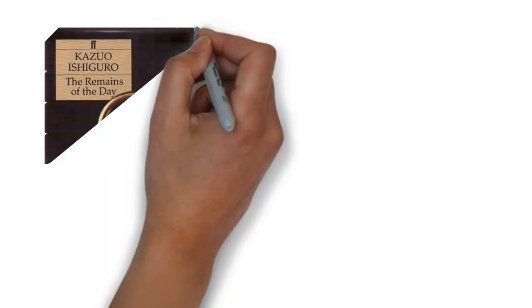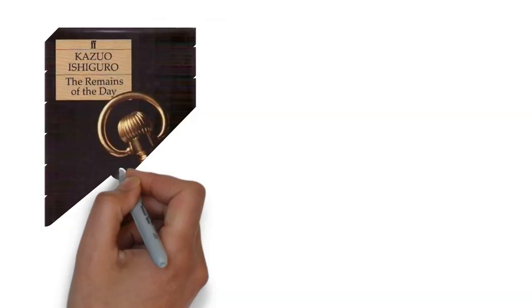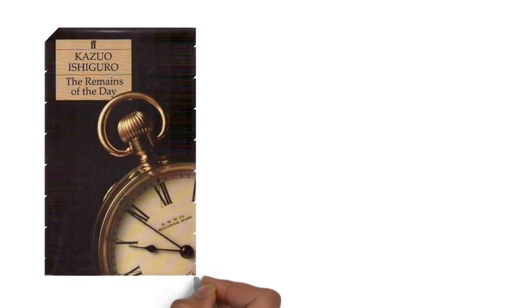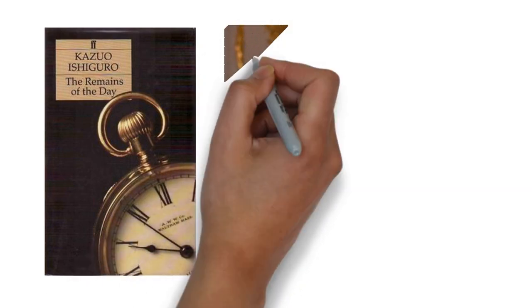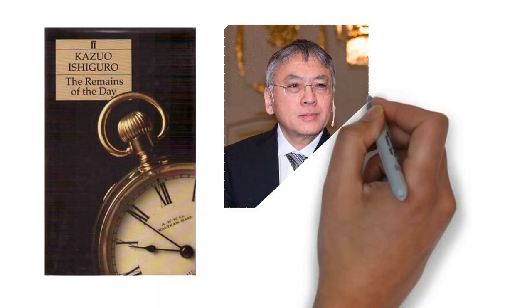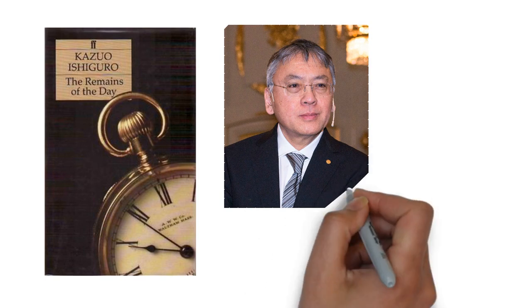The Remains of the Day is a 1989 novel by the Nobel Prize-winning British author Kazuo Ishiguro. The work received the Booker Prize for Fiction in 1989. A film adaptation of the novel was made in 1993.